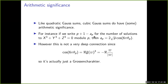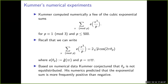The Gauss sum of the cubic character is a root of unity, which I denote e(θ_p). Cubic Gauss sums have arithmetic significance: if you're interested in the number of solutions to the cubic Fermat curve modulo p, then the number of solutions is p + 1 − a_p, where a_p = 2√p · cos(6πθ_p) and θ_p is the angle of the cubic Gauss sum.